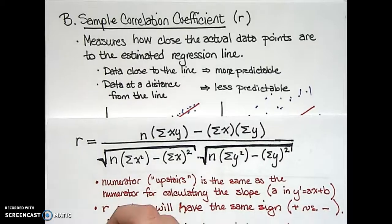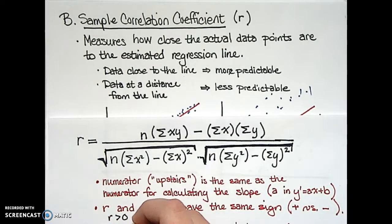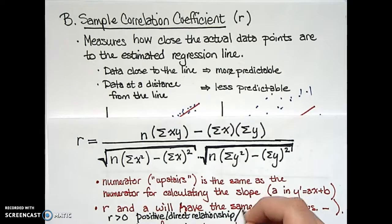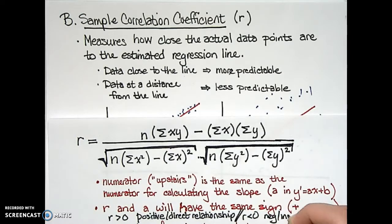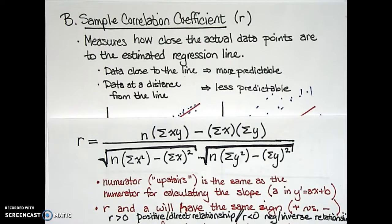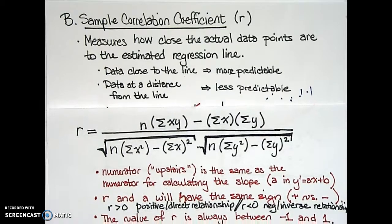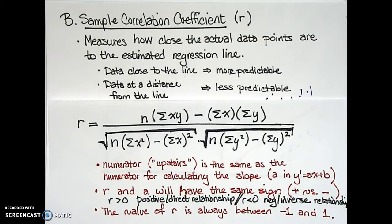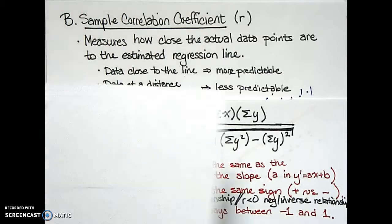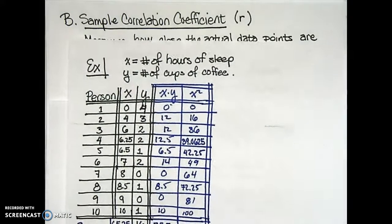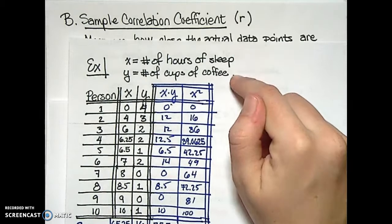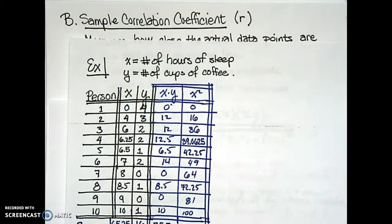A few things to observe: the numerator of this formula is the same as the numerator for calculating the slope — the value 'a' in our estimated regression line. This means both r and the slope a will have the same sign. When r is positive, we have a positive or direct relationship; when r is negative, we have a negative or inverse relationship. Also, the value of r is always between negative one and one.